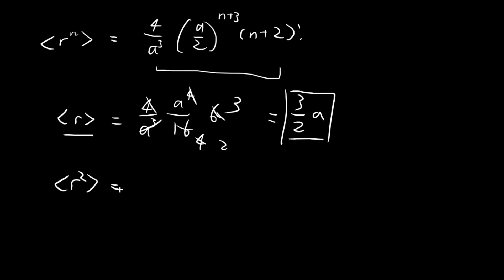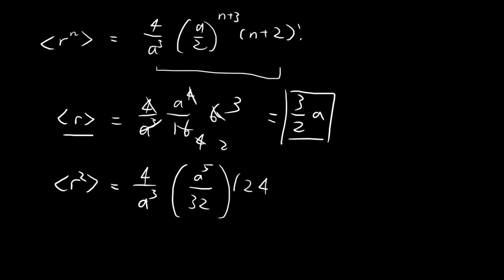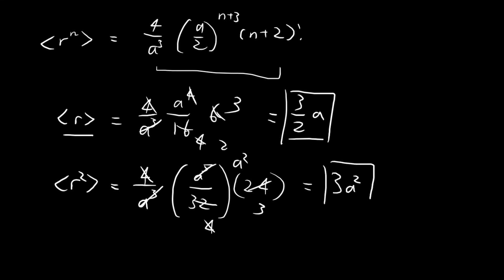For the expected value of r squared, we substitute n=2. We get (a/2) to the power of 5, which is a⁵/32. Then (2+2) factorial = 4! = 24. Using 8 as a common factor, the 32 becomes 4 and the 24 becomes 3, which simplifies further, leaving a². In the end we get 3a². This is the expected value of r squared.